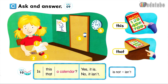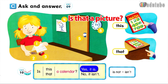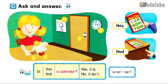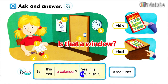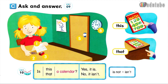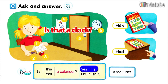Number 4. Is that a picture? Yes, it is. Number 5. Is that a window? No, it isn't. Number 6. Is that a clock? Yes, it is.